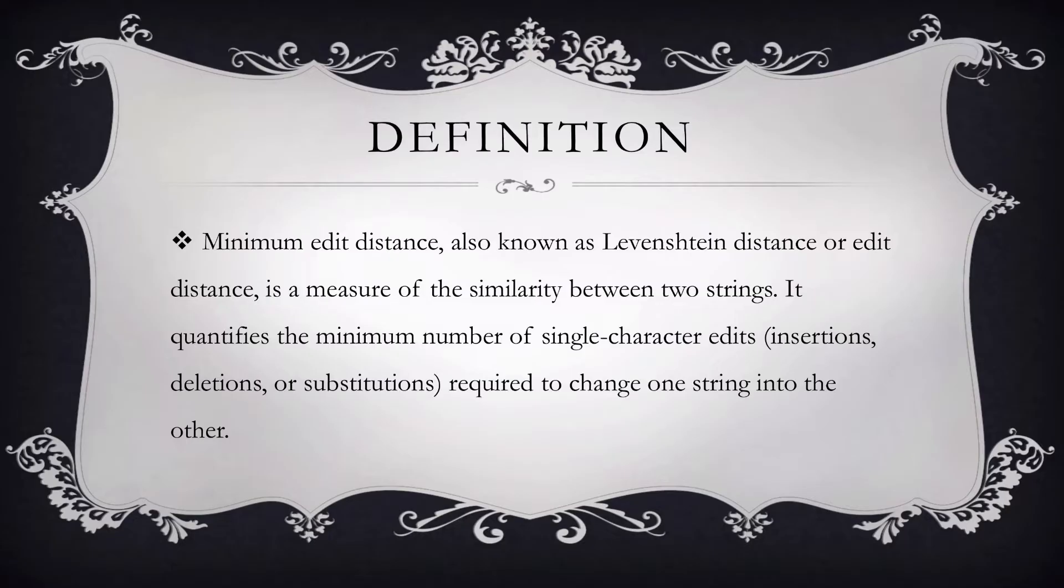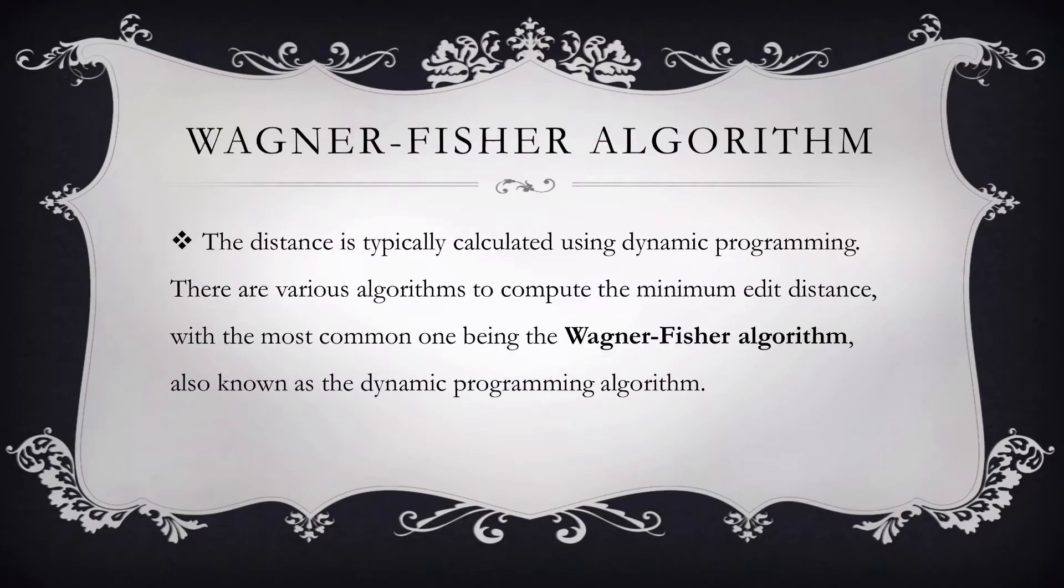Minimum edit distance is calculated using a dynamic programming approach, which is basically a matrix representation in which we represent both the strings, the source and the target, and then match them using the dynamic programming algorithm, also known as the Wagner-Fisher algorithm.